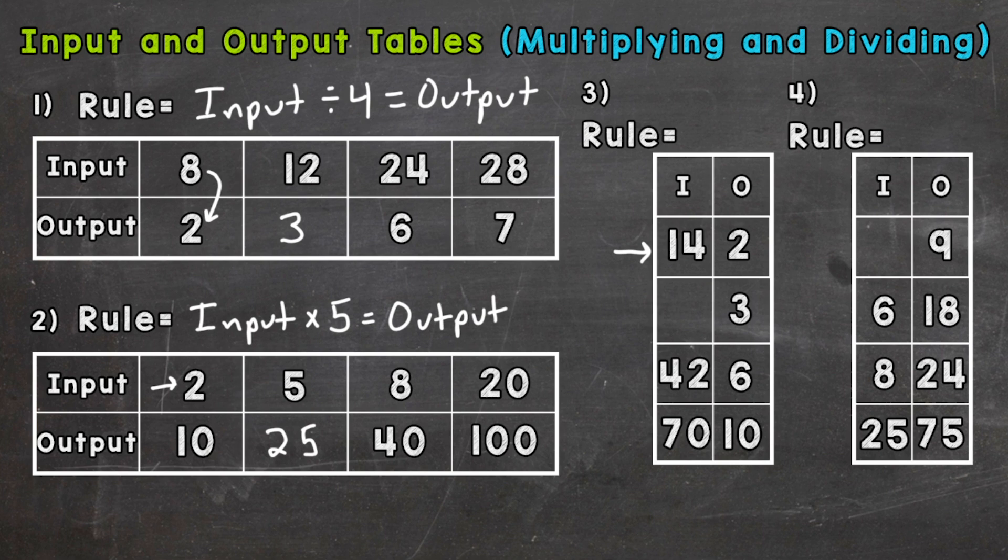How do we get 14 to equal two? Well, we can divide it by seven. 42 divided by seven is six, and 70 divided by seven is 10. So we need to think here for the blank, what divided by seven equals three? And the answer to that is 21. So our rule is input divided by seven equals the output.